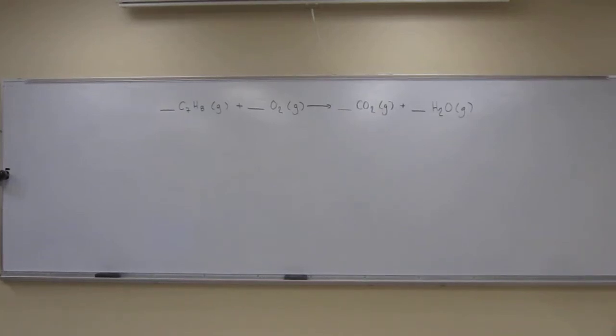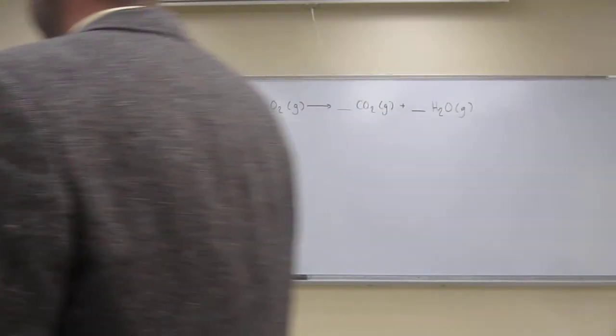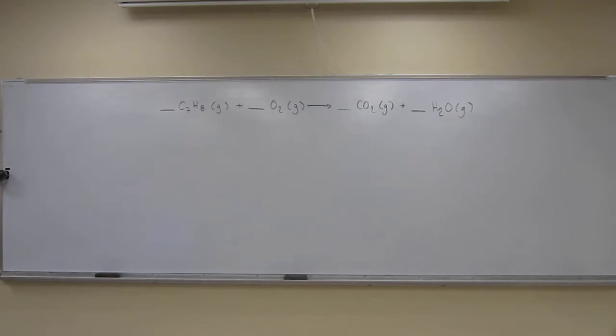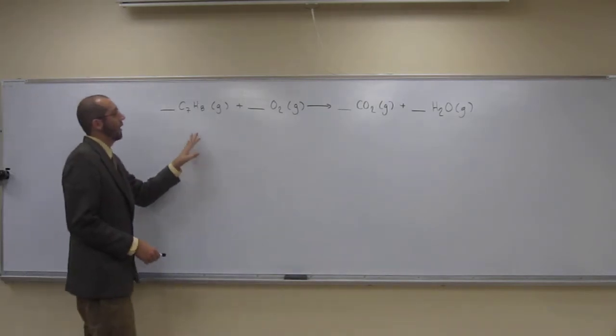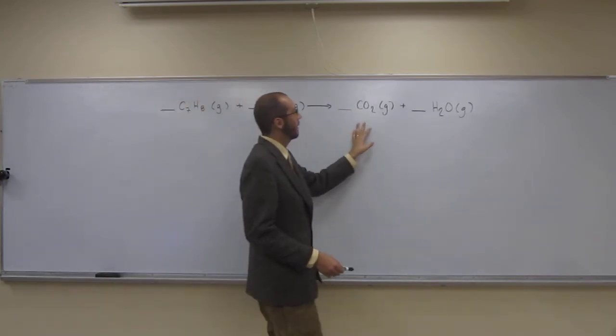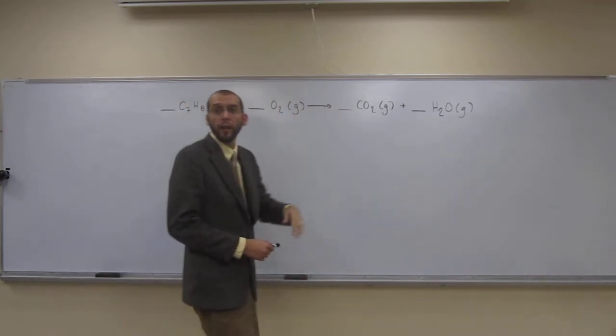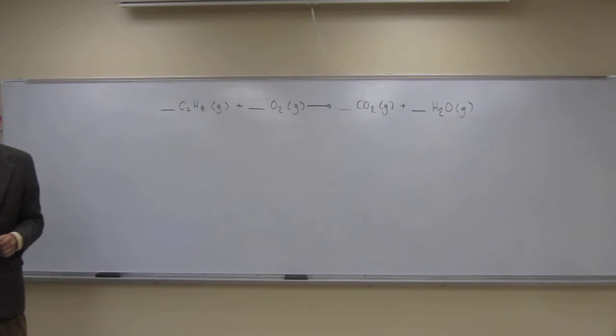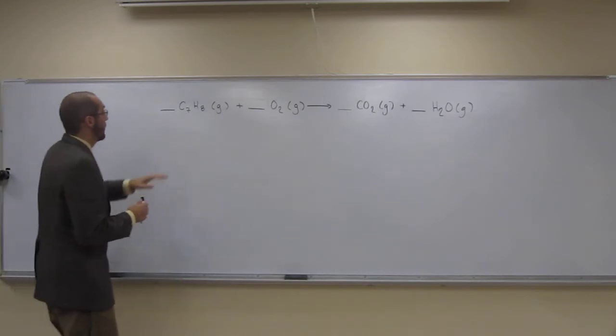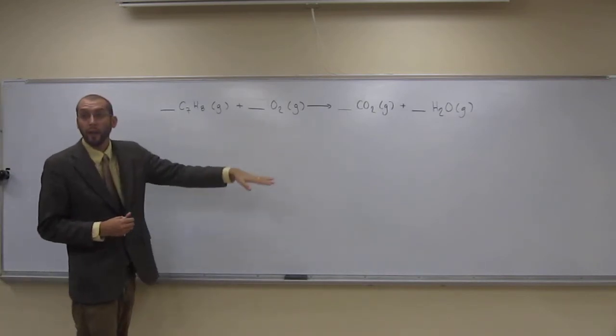Okay, so let's go ahead and balance this combustion reaction. So, C7H8 plus O2 goes to CO2 and H2O. Remember how we do these? We write down what we've got on each side.